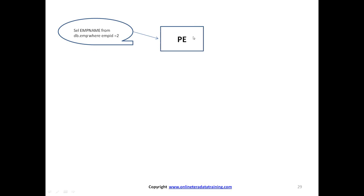Let's quickly recap what we have covered with the help of a short animation. Suppose this is a query a user wants to execute: SELECT employee_name FROM db.employee WHERE employee_id = 2. Basically we want to search for the name whose employee ID equals 2. This query will first hit the Parsing Engine. The Parsing Engine creates the required session, performs a syntax check, verifies that the table and columns exist, checks that you have the proper privilege to access the table, and then the Optimizer creates an explain plan to retrieve the result.